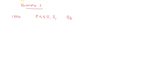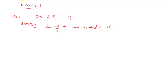In a reversible process, the change in entropy dS is given by dQ/T, where dQ is the heat absorbed or rejected at temperature T. So this is the definition of entropy: dS is equal to dQ by T.